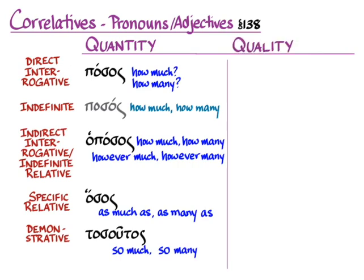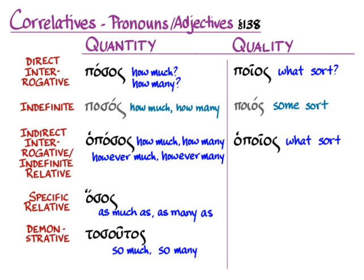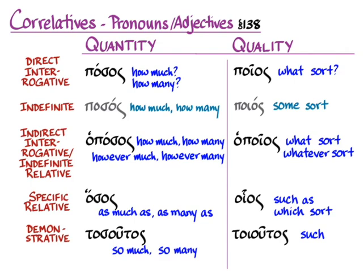We can do the same thing when talking about the quality of something. We can ask 'what sort' or 'what kind' with poios, poia, poion. The enclitic version — not in Hanson and Quinn — would be poios for 'some sort.' The indirect interrogative — 'she asked what kind of man he was' — is hopoios, hopoia, hopoion. The indefinite relative translation is 'whatever sort' or 'whatever kind.' The specific relative is hoios, hoia, hoion, meaning 'which sort.' And the demonstrative is toioutos — 'such a man,' 'such a thing,' 'that sort of man' — with feminine toioute and neuter toiouto.